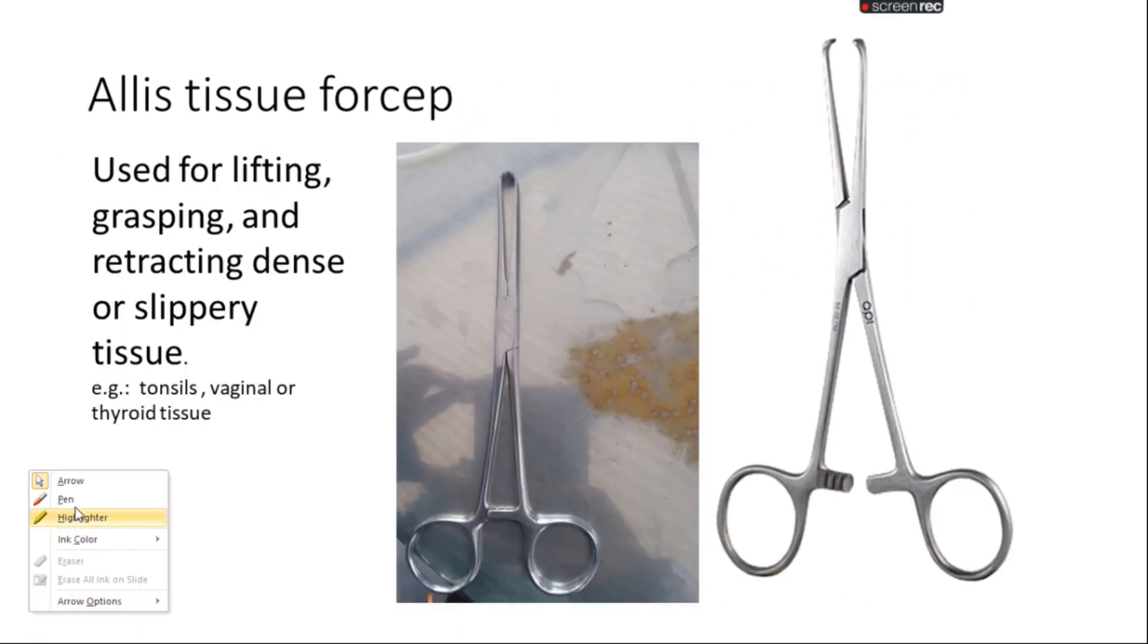LS tissue forceps are a type of tissue forceps used for lifting, grasping, and retracting dense or slippery tissues, for example tonsil tissue, vaginal tissue, or thyroid tissue.